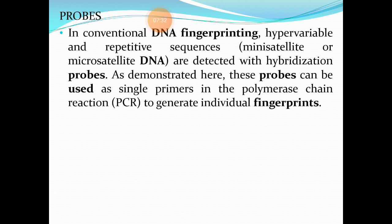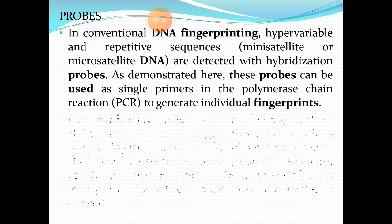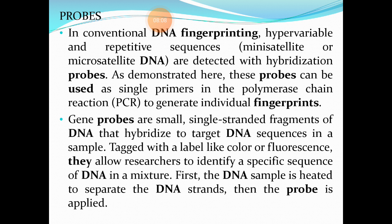After knowing about molecular markers, you should know about probes. In conventional DNA fingerprinting, hypervariable and repetitive sequences like mini satellite or micro satellite DNA are detected with hybridization probes. These probes can be used as single primers in PCR to generate individual fingerprints. Gene probes are small single-stranded fragments of DNA that hybridize to target DNA sequences in a sample.